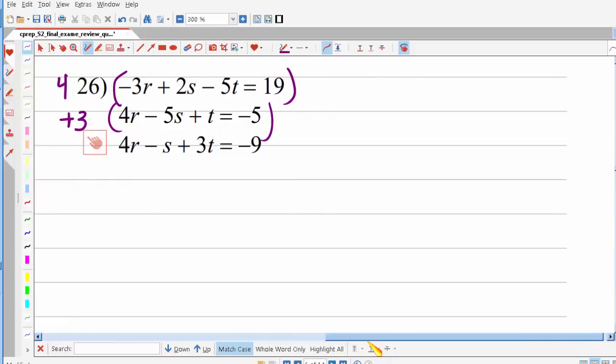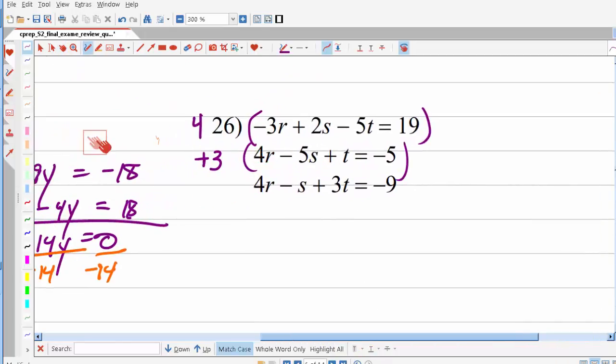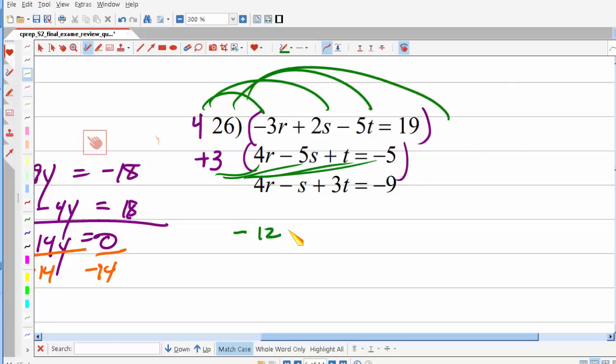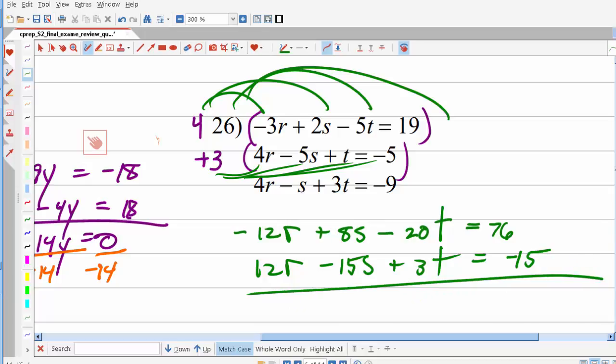Okay, and do the same thing that we've been doing. So I'm going to write a negative 3 here and a 4 there. And I'm going to change the sign of one of those numbers. Then I distribute. And what do I get? I get negative 12r plus 8s minus 20t equals 76. And here I get positive 12r minus 15s plus 3t equals negative 15. Okay, add those together. And I get those drop out and I get negative 7s minus 17t equals 61. So that's my first equation where I eliminated r.